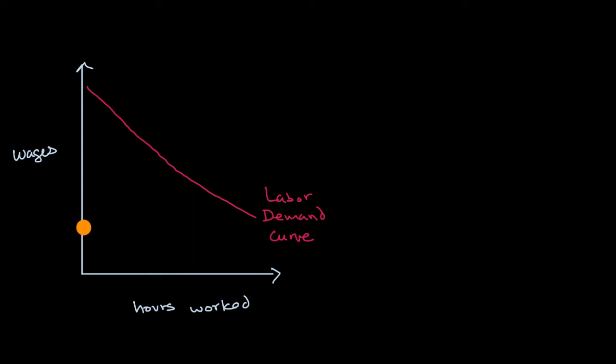When wages are low, a lot of folks might say, hey, I have other things to do with my time. But then as wages get higher and higher, they might trade off those other things. They're doing those other things in some ways has a higher opportunity cost. It gets more expensive. And so they might trade off those other things for working.